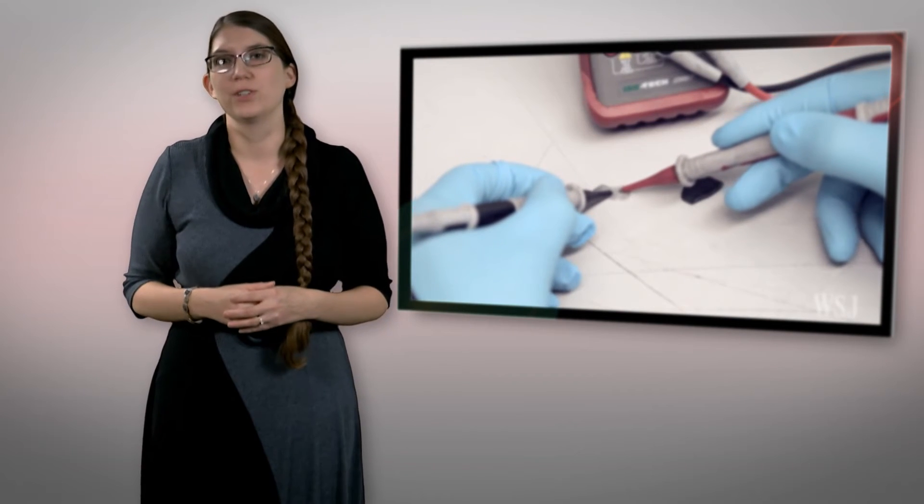That's just what researchers at Amber, an Irish Materials Research Center, have discovered. Just a small amount of graphene added to the silly putty, also known as polysilicone, makes a substance extremely sensitive to even the slightest deformation or impact.